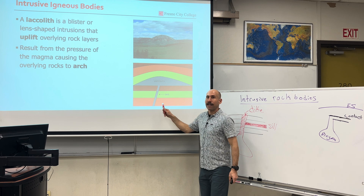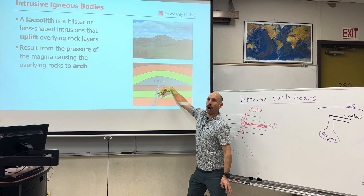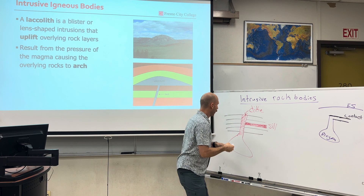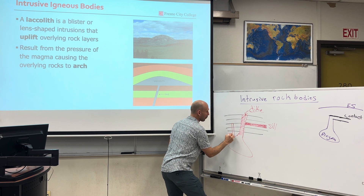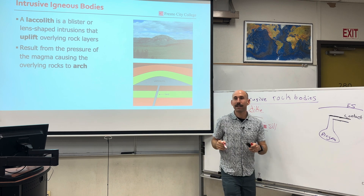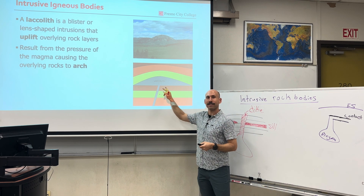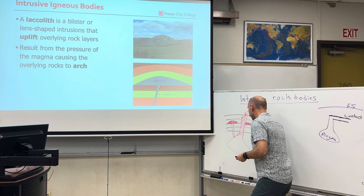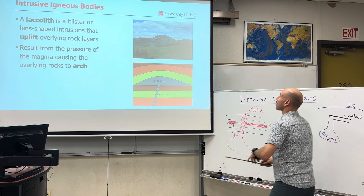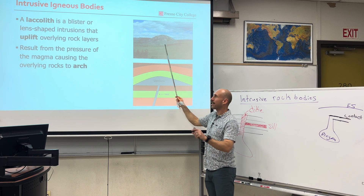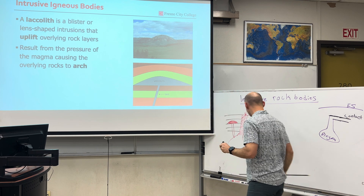A dike can actually fill up and start to create an arch above it. That arch is going to push up the layers, and if the layers are displaced ever so slightly, that displacement is called a lacolith. The lacolith is our third type of igneous intrusion, fed by a dike, and creating structures that when all the other material on the surface is eroded around, create these igneous-shaped hills.